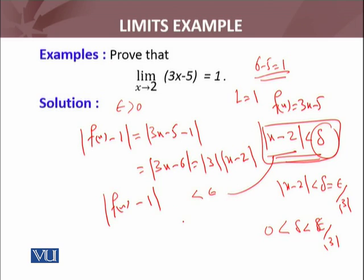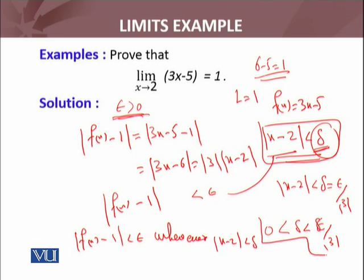|f(x) minus 1| less than epsilon whenever this inequality holds. This will be true. Epsilon was not particular, it was arbitrary. For arbitrary epsilon, we are able to find a delta that satisfies this condition. Let me write: |f(x) minus 1| less than epsilon whenever |x minus 2| is less than delta, where delta's maximum value can be epsilon over 3, or you can take any smaller delta.